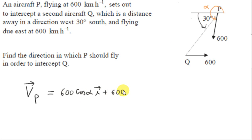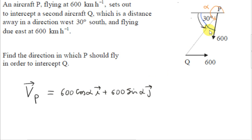The y-component is the magnitude 600 times sine of alpha. If alpha is between 180 and 270, sine of alpha will come out negative — that's exactly what we want. So if you're unsure about the general direction of a vector, it's best to use the convention of measuring your angle anticlockwise from the positive x-axis, and then you don't have to worry about signs. Just multiply the magnitude by cos of the angle to get the I component, and the magnitude times sine of the angle to get the J component — no minus signs appearing here.